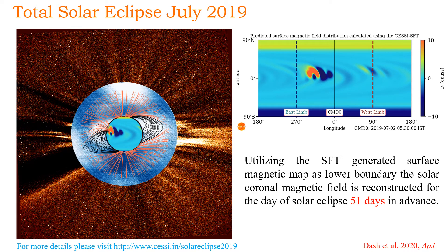Repeating a similar exercise for the total solar eclipse of July 2019, we utilized an SFT-generated surface map 51 days in advance to predict the coronal magnetic field structure. Here also we see a reasonably good match to the observations. A detailed synopsis of this prediction attempt can be found on the CESSI webpage, and results are also published in a research article. For this particular case we also synthesized the polarization characteristics for the global solar corona.